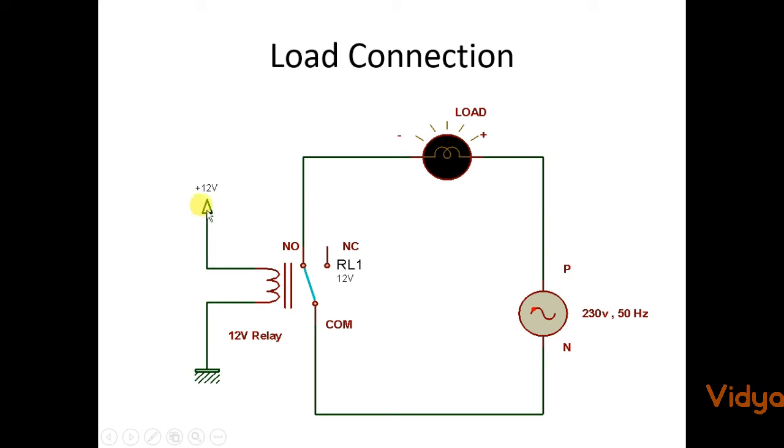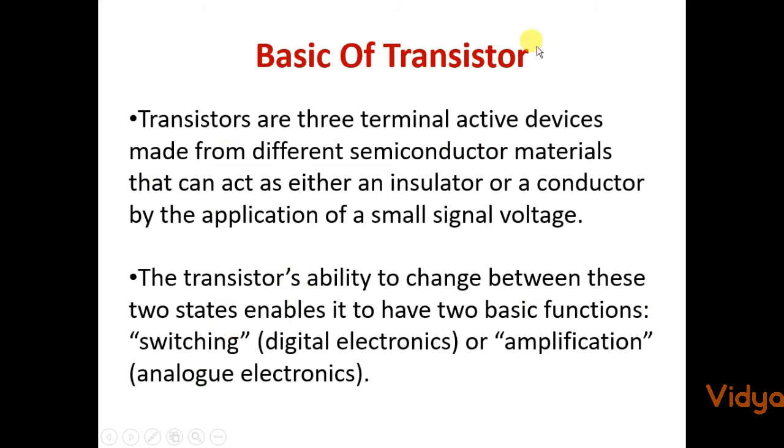The question still remains the same: if the relay coil requires 12 volt for operation and if the microcontroller gives only 5 volt on its output pin, how do we turn on the relay? Because the controller can't give 12 volt output.